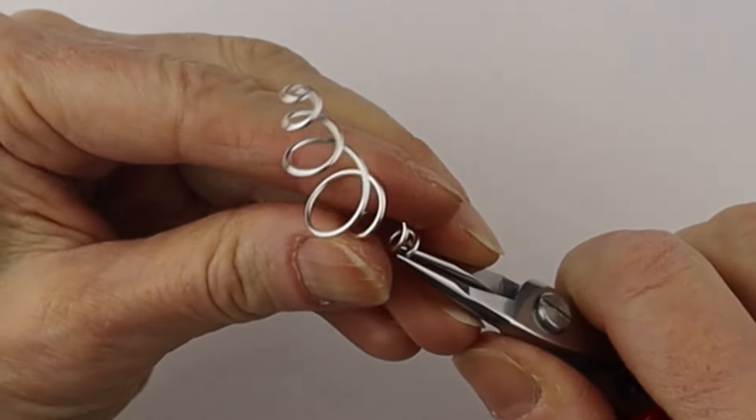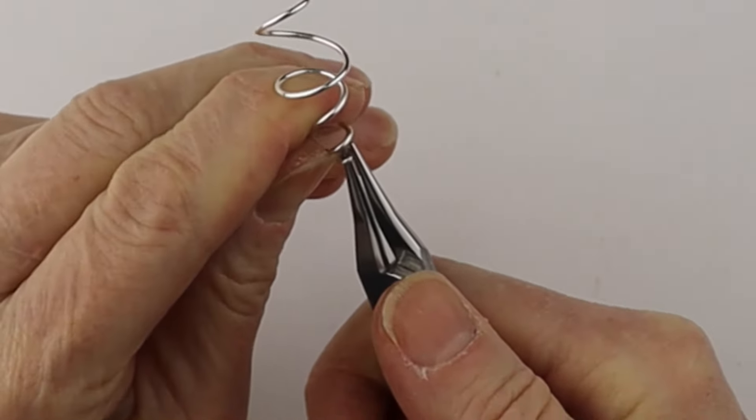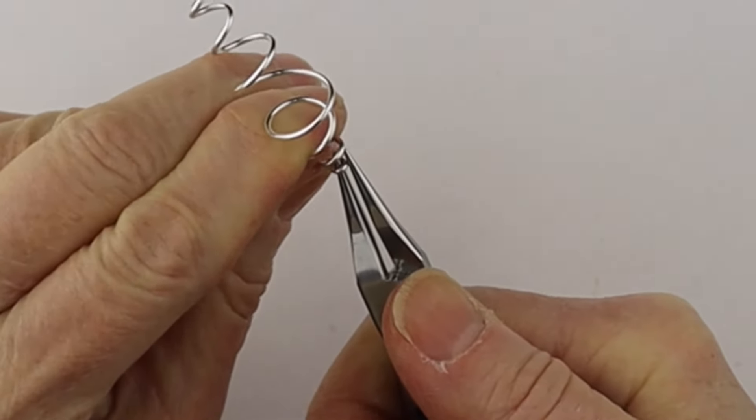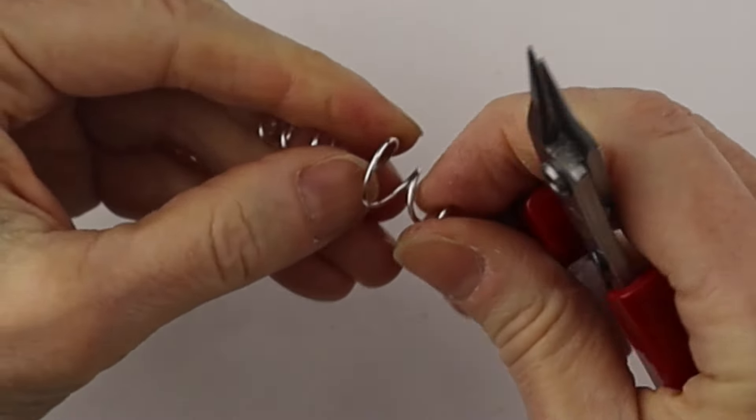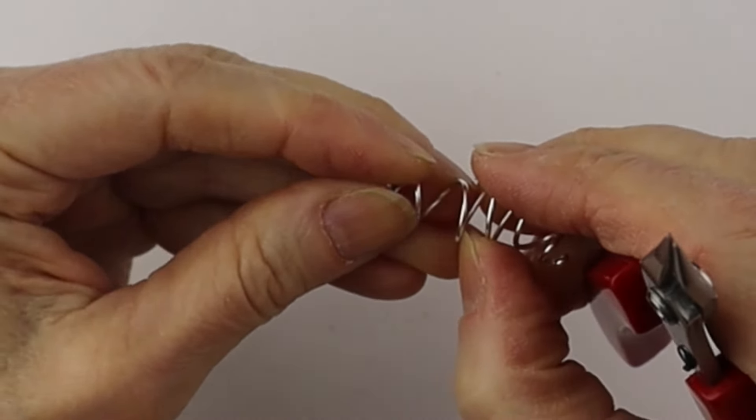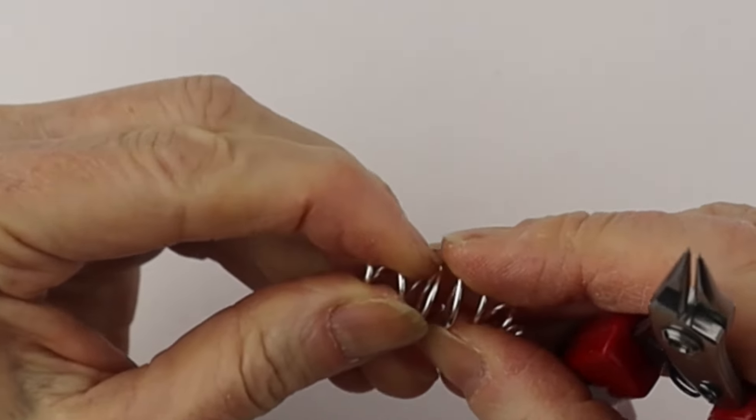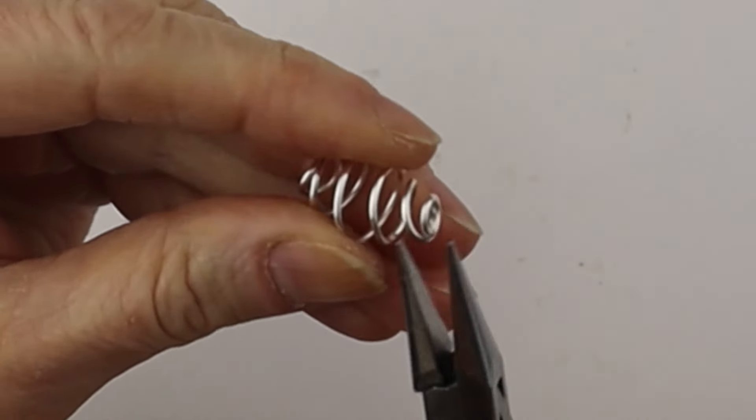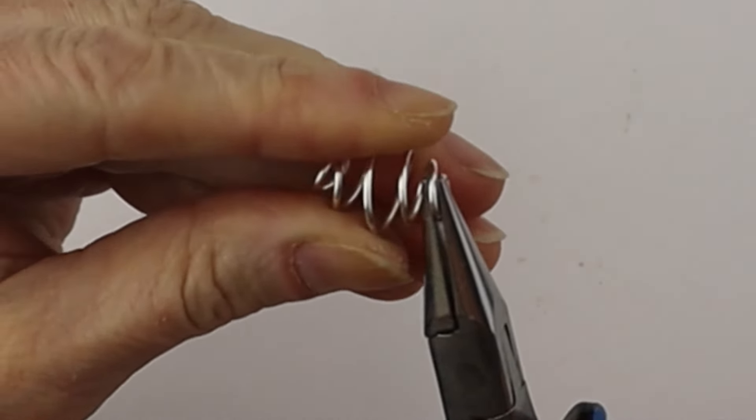After that, get your pliers and hold the wire and push it down to compress it. You can also use your hands to compress it, pushing the wires together and wiggling them around as needed.